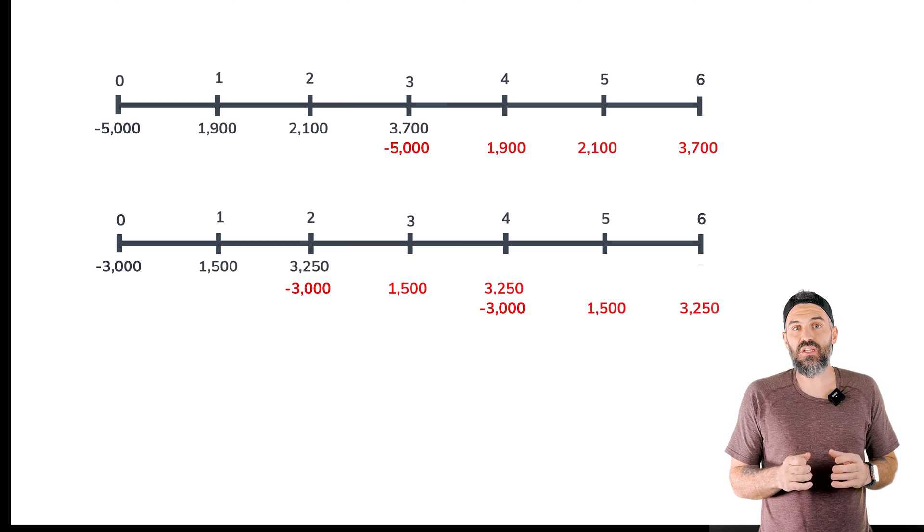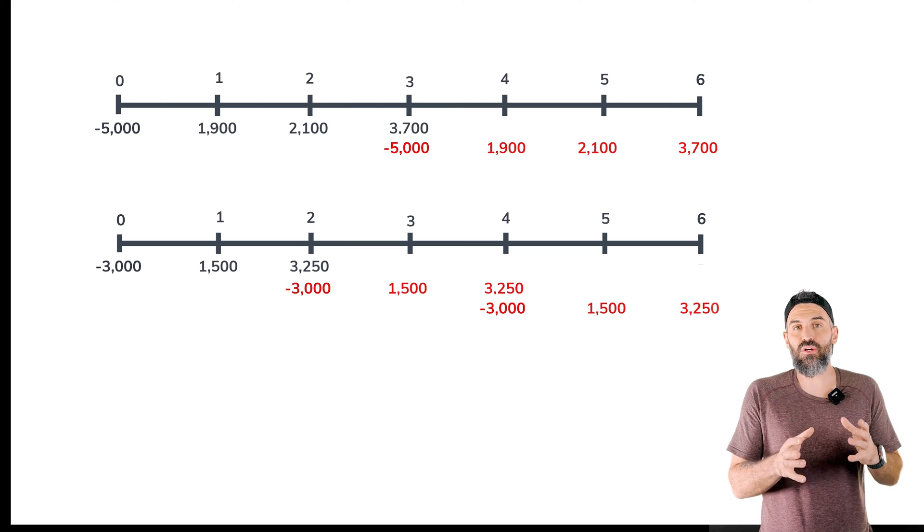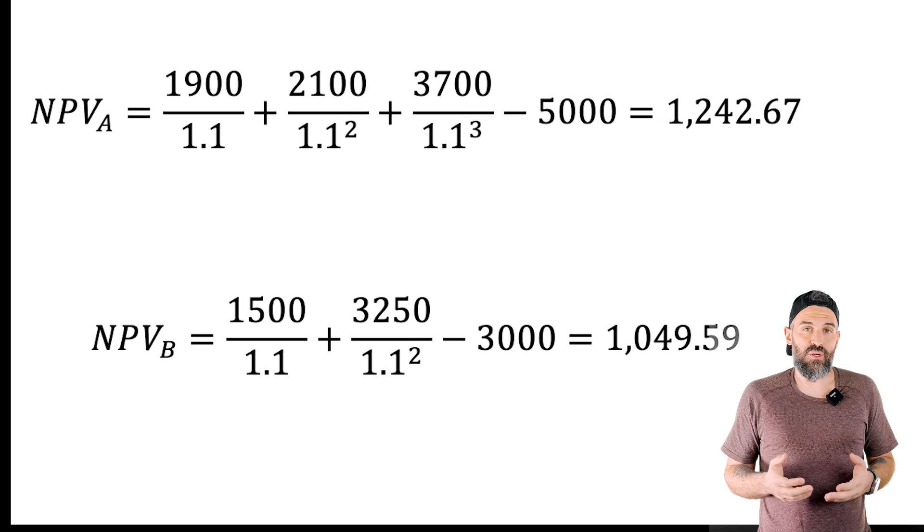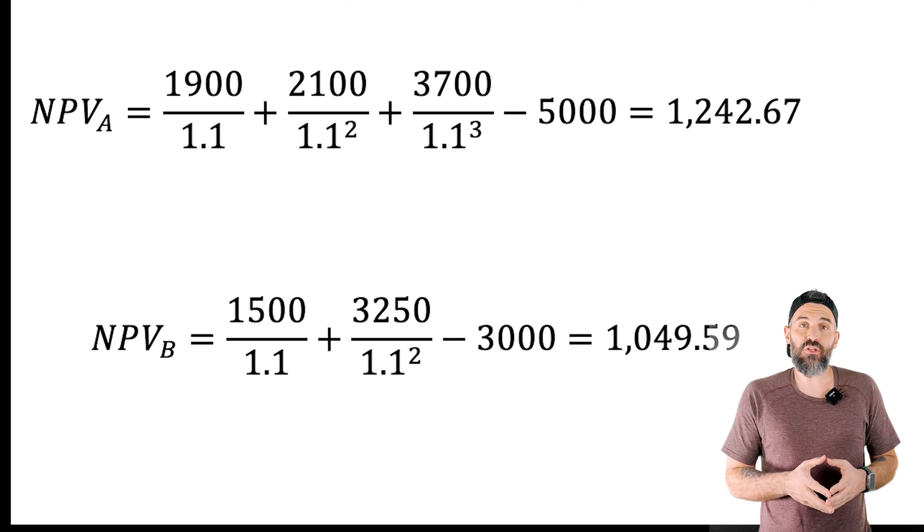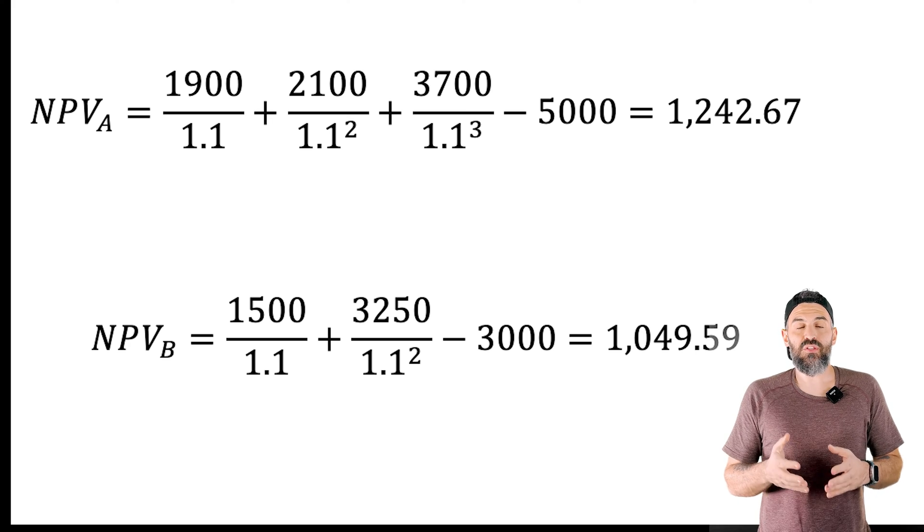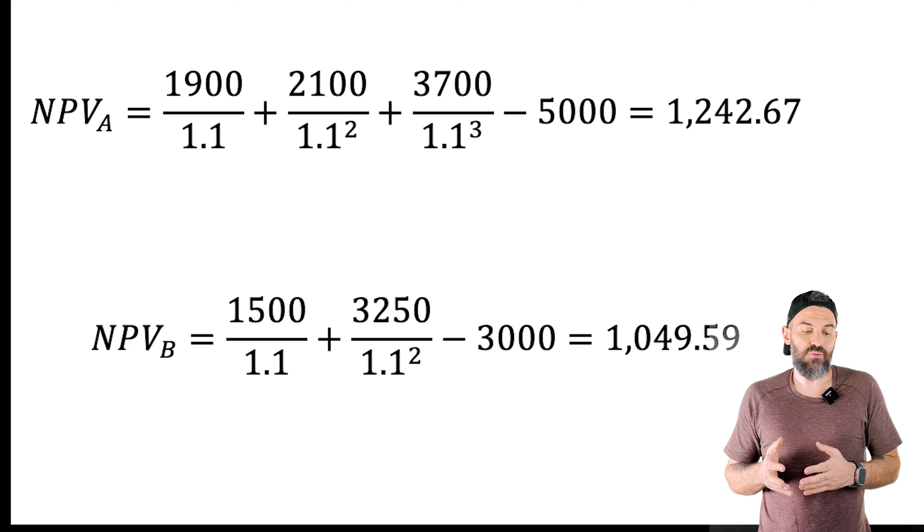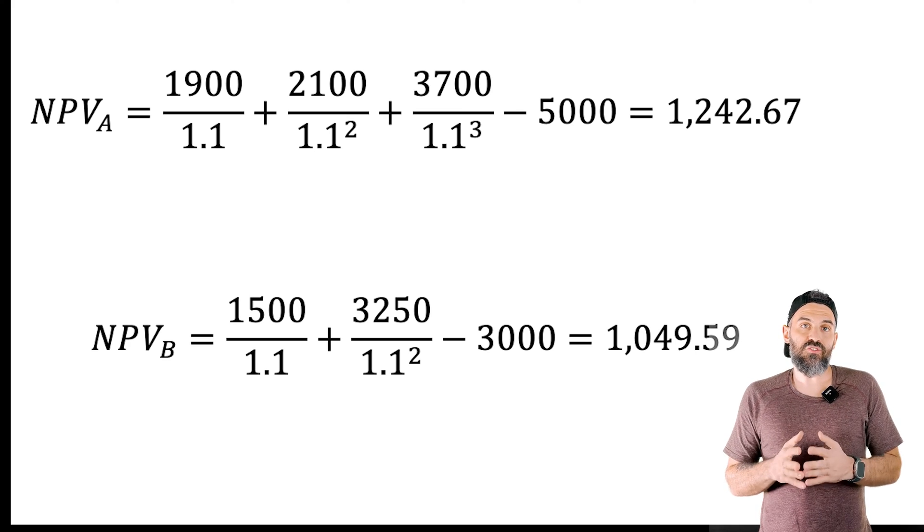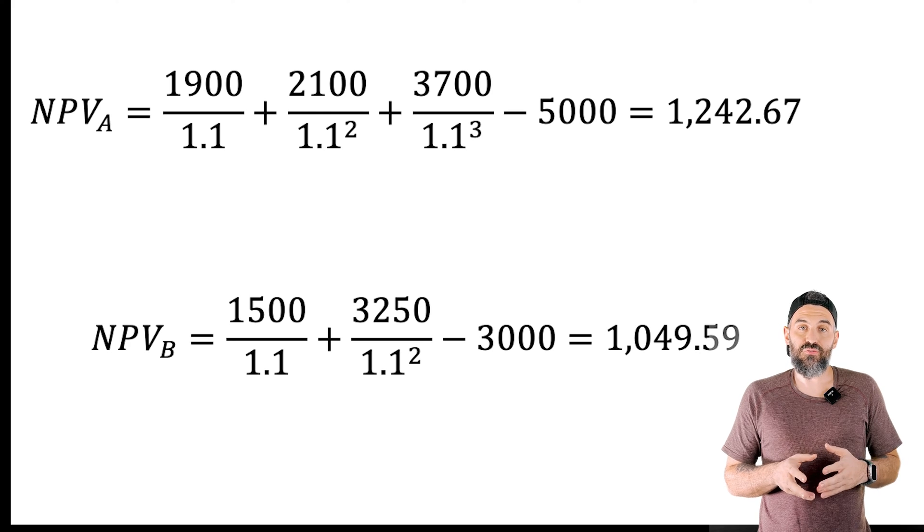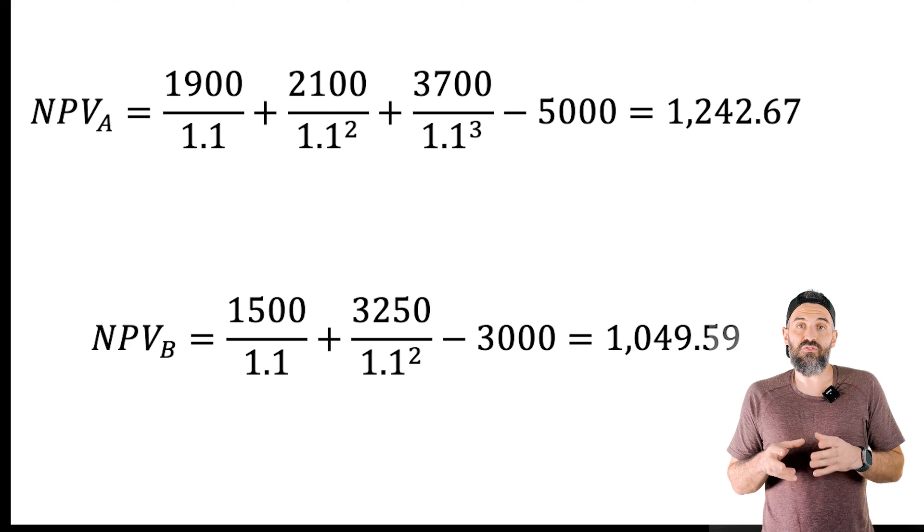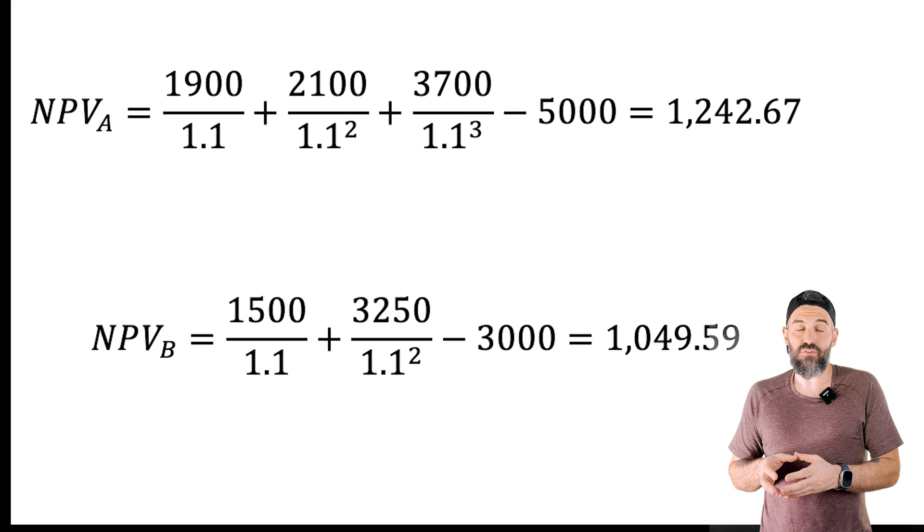Now the way to do this is by first calculating the net present value of the investment itself. Now we all know how to do this. You're going to take the present value of all the inflows, subtract the outflows, and you should get a net present value of $1,242.67 for investment A, $1,049.59 for investment B.